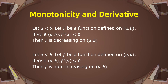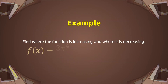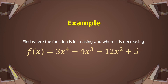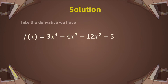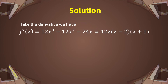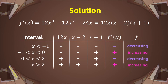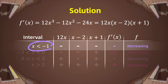For example, find where the function f(x) is increasing and where it is decreasing. We take the derivative of f(x) and find f'(x) equal to 12x times (x minus 2) times (x plus 1). Then we create a plus-minus chart to find out in which intervals the function is increasing and decreasing. We find that on the interval x less than negative 1, f'(x) is less than 0, meaning the function is decreasing on the interval negative infinity to negative 1.